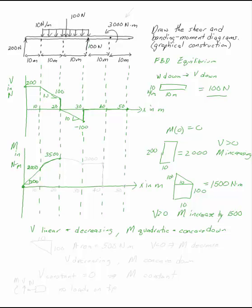In the next piece, I have a triangle of 100 by 10, so that again is going to drop by 500. This is below the axis, so M is going to decrease. If I decrease 3,500 by 500, I get to 3,000. V is still decreasing, so M is still concave down.